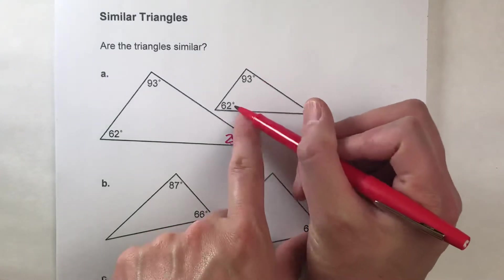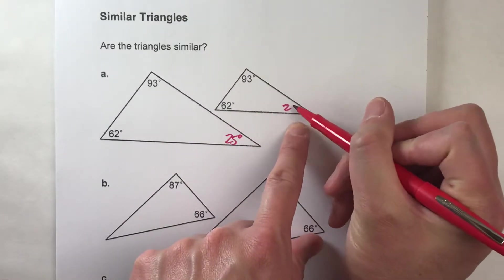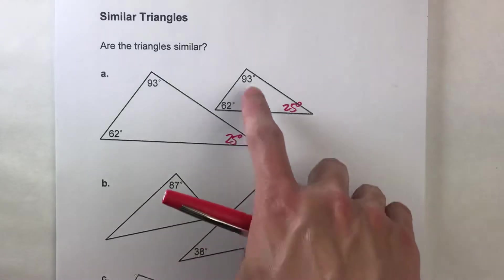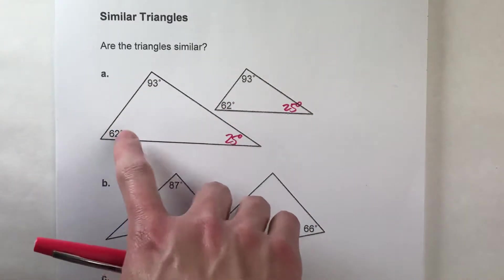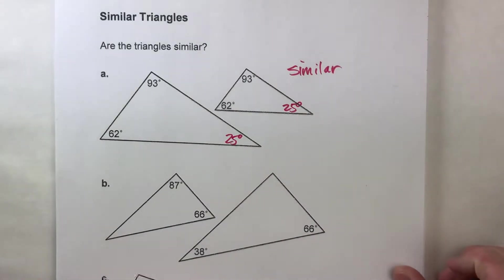Over here this is 93, this is 62, that adds up to 155 which means this is also 25 degrees. And notice now when we look at these three angles and these three angles, they're the same. So these two triangles are similar.